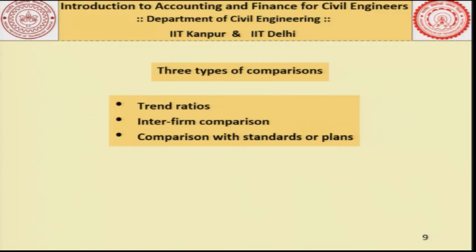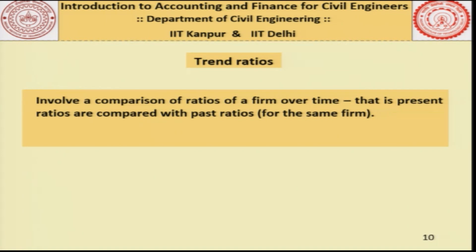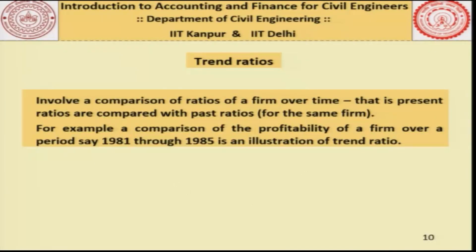As far as the industry is concerned, there are 3 types of comparisons which are made: trend ratios, inter-firm comparisons, and comparisons with standards or plans. As far as trend ratios are concerned, they involve a comparison of ratios of a firm over time — present ratios are compared with past ratios to see how a given company has performed. For example, a comparison of the profitability of a firm over a period from 1981 to 1985 is an illustration of the trend ratio.